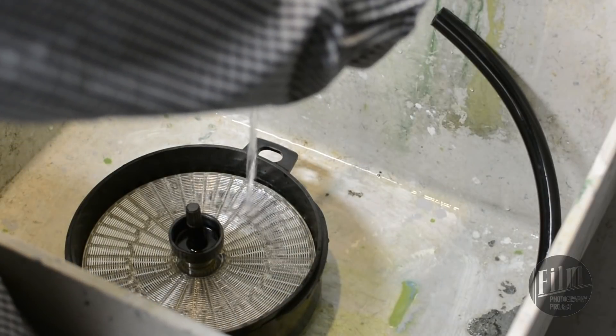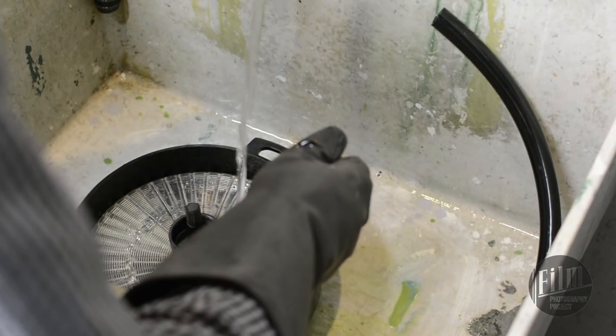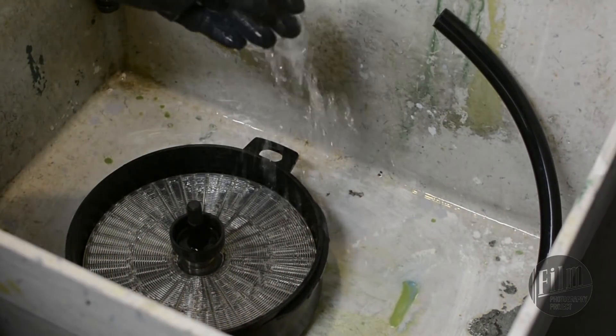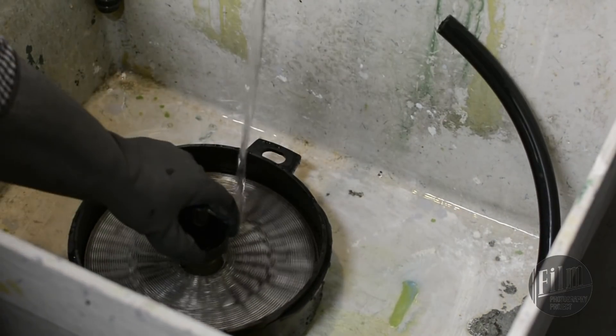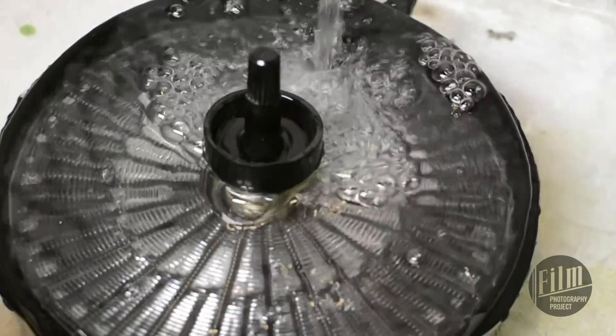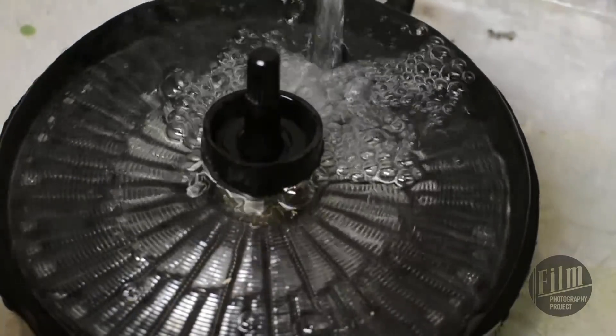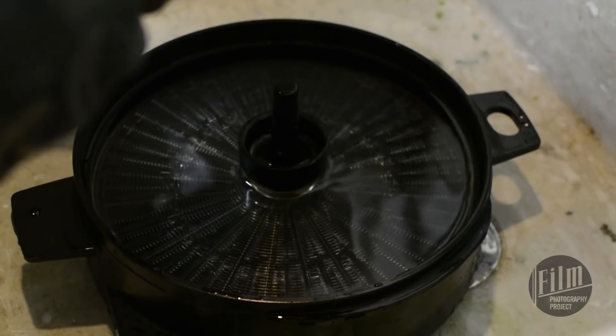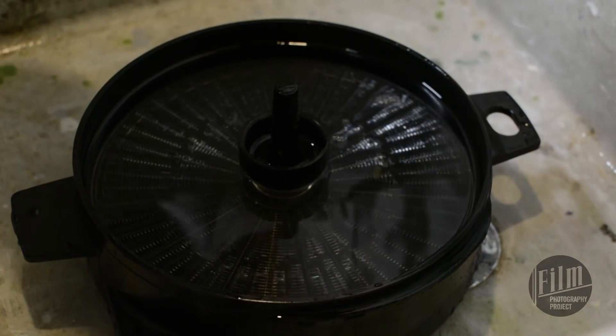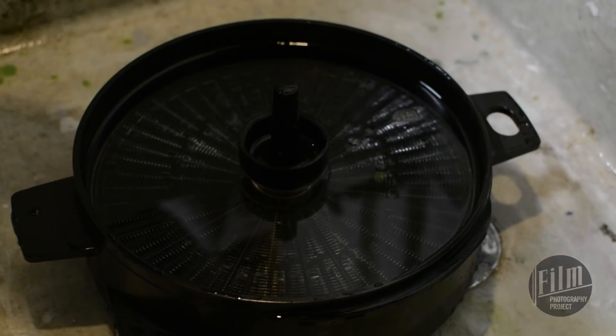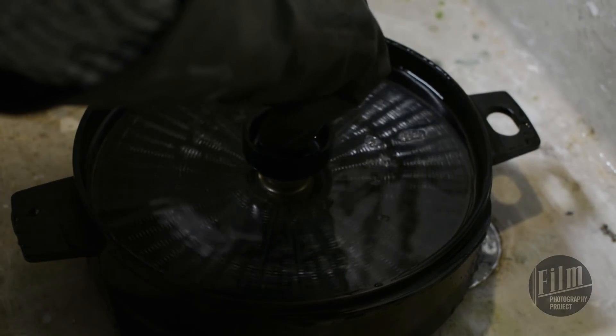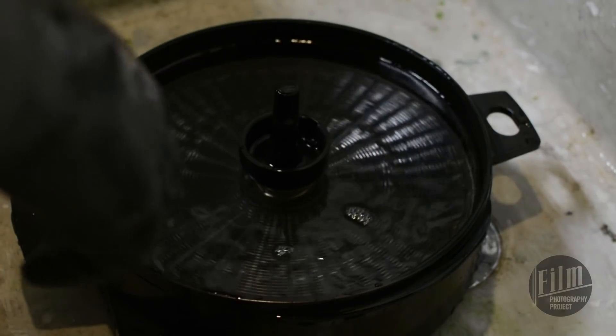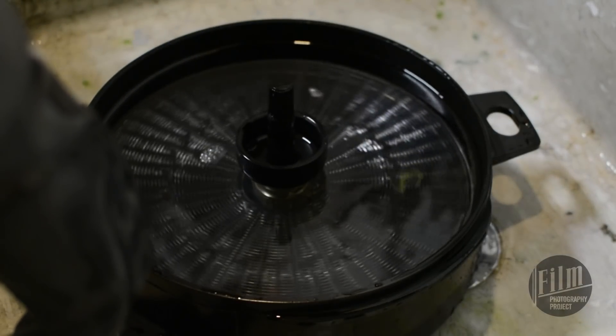Now it's time for the final rinse. This time, your water should be a little warmer than usual. Somewhere between 22 and 24 degrees Celsius. Let the film rinse for about 5 minutes. After the 5 minutes are up, add a few drops of your wetting agent. Agitate very gently for 1-2 minutes. Avoid creating too many bubbles in the wetting agent.